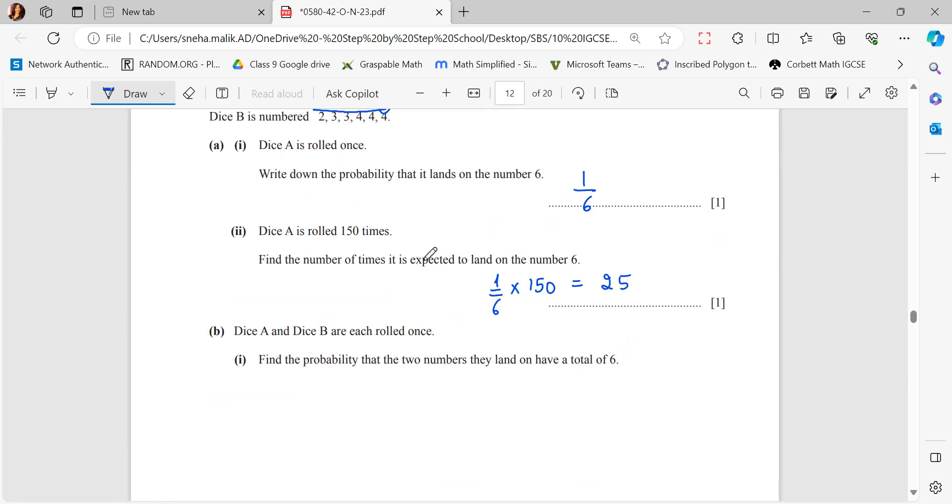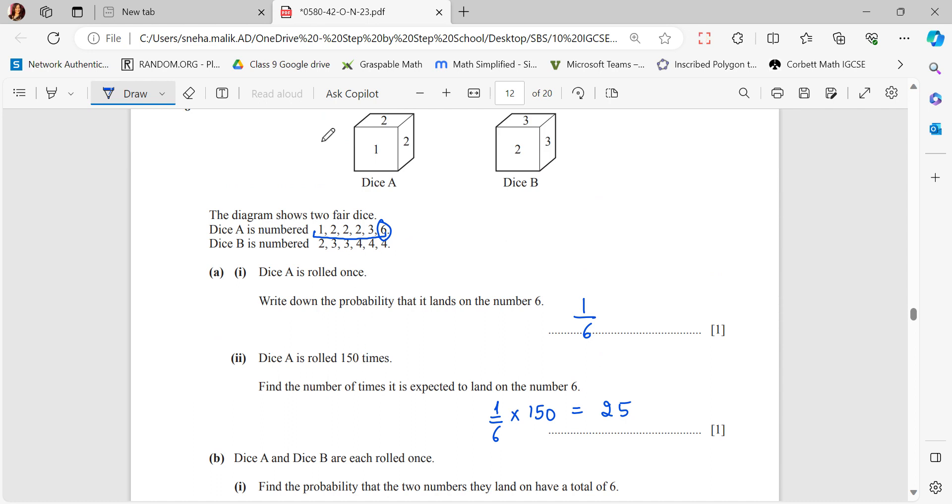Dice A and B are each rolled once. Find the probability that the two numbers they land on have a total of 6. On observing the sample space, I know that we can have 36 options, like 1, 2, 1, 3, 1, 3 again, 1, 4, 1 with 4 again, and 1 with 4. So 1 will be paired with 6 of them 6 times. 2 will be paired with 6 of them 6 times. So the sample space is of 36 outcomes.